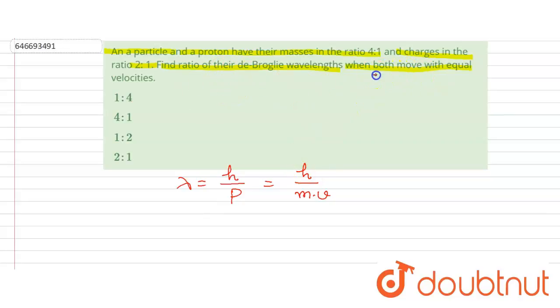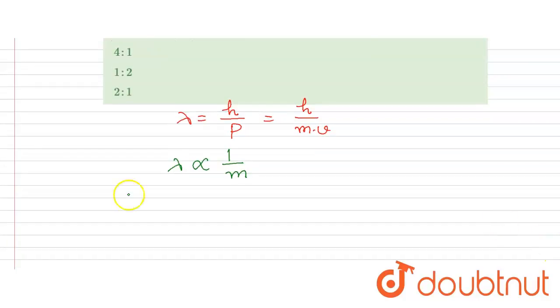So the lambda will be inversely proportional to mass. So we can write lambda alpha divided by mass. Lambda alpha particle will be equal to mass of proton divided by mass of alpha.